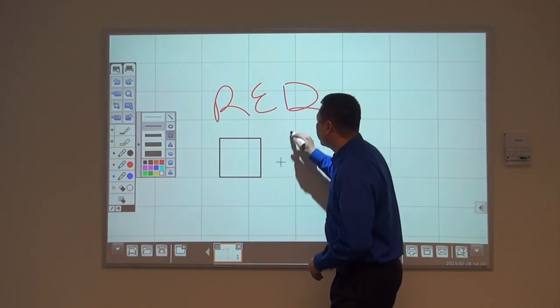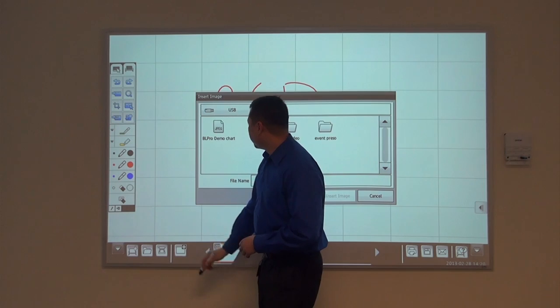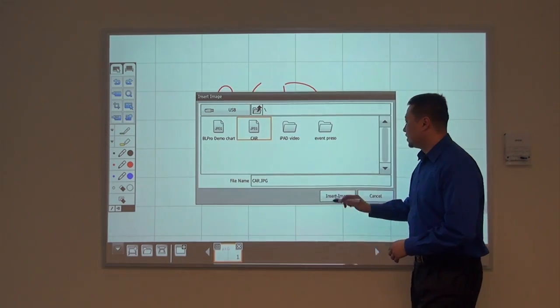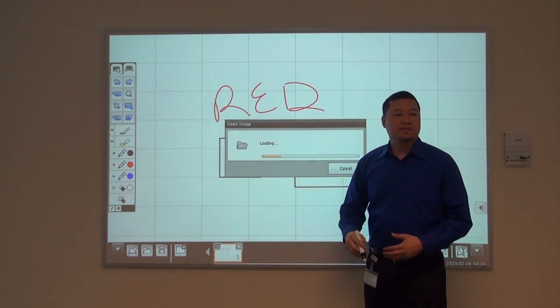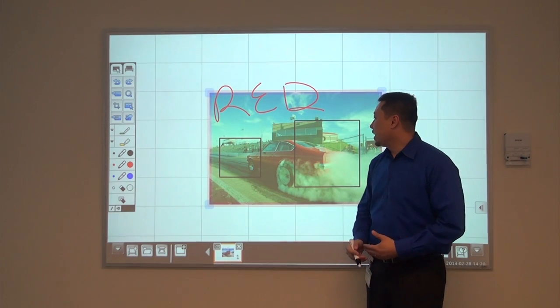I'm going to draw a couple squares. I'm going to insert my own image that I have in a saved thumb drive. If it were saved onto a network drive, I can also access it from here.